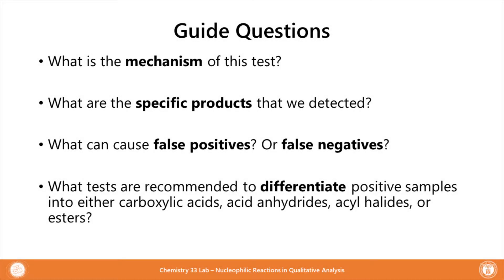Here are some guide questions. What is the mechanism of this test? What are the specific products that we have detected by their minty and fruity smells? What can cause false positives or false negatives? And because this test is quite broad, what tests are recommended to differentiate positive samples into either carboxylic acids, acid anhydrides, acyl halides, or esters?